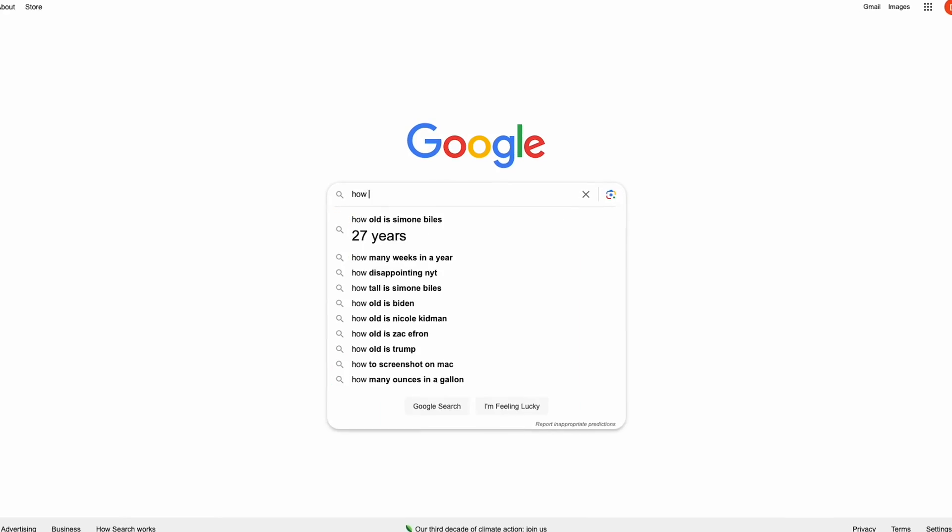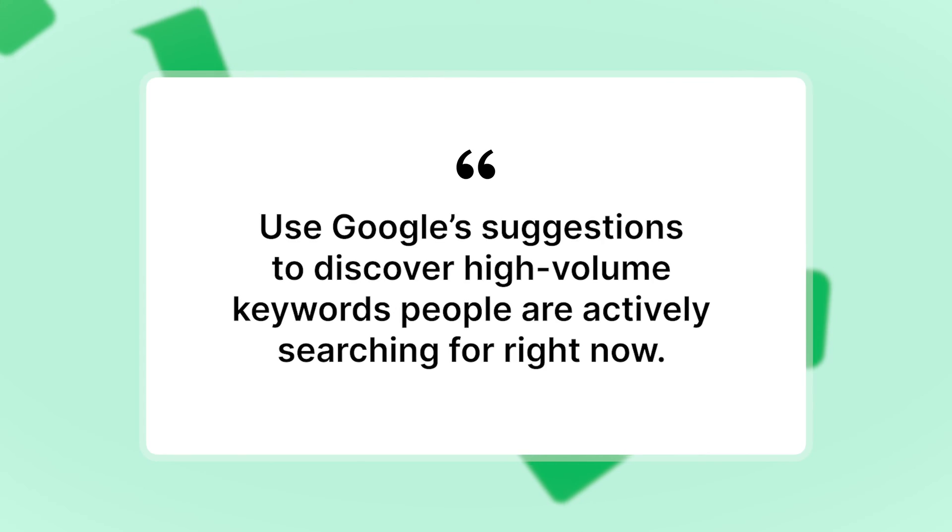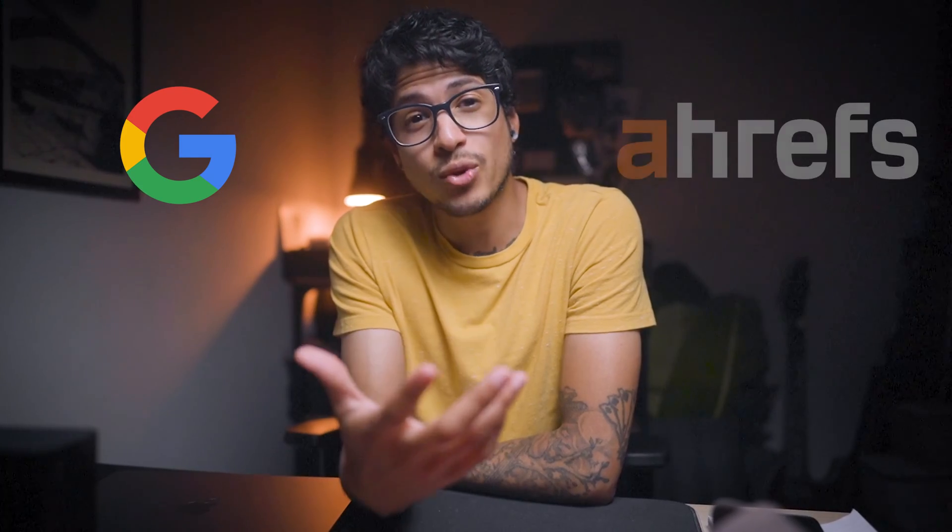First up, targeting the right keywords. Think of keywords as the secret sauce in your recipe. Without them, your landing page is just a bland dish that nobody wants to try. SEO keywords are the specific words that people enter into search engines when they're looking for information, products, or services. Bonus tip: use Google's suggestions to discover high-value keywords people are actively searching for right now. Use tools like Google Keyword Planner or Ahrefs to find out what your audience is searching for. Also, don't overstuff your page with keywords — keyword stuffing is a big no-no.